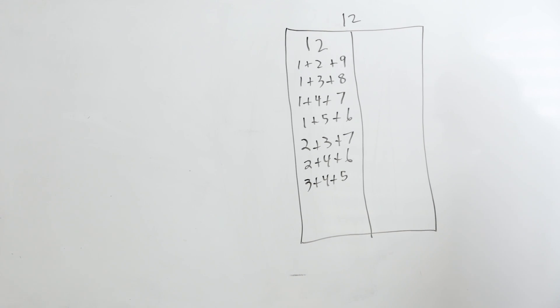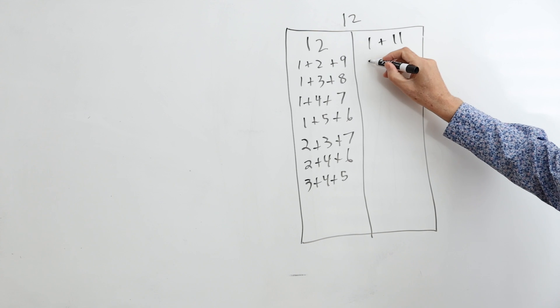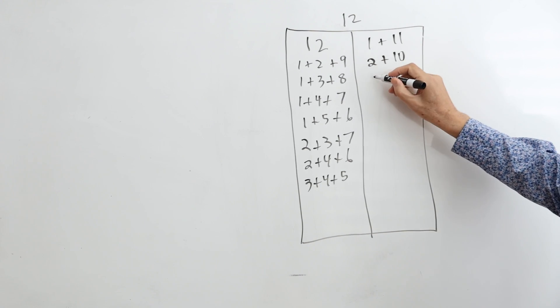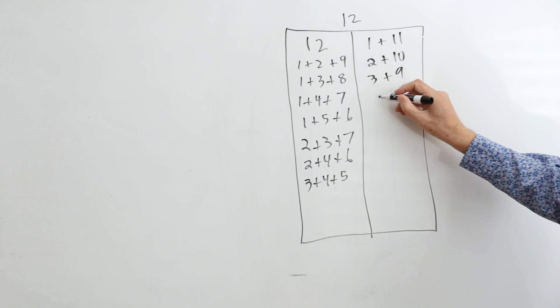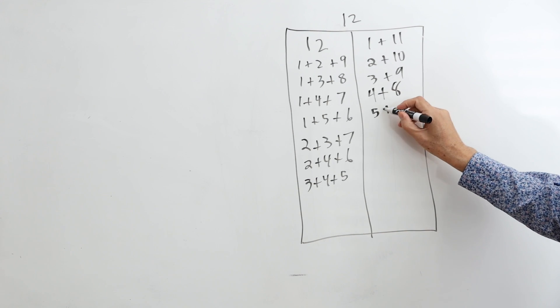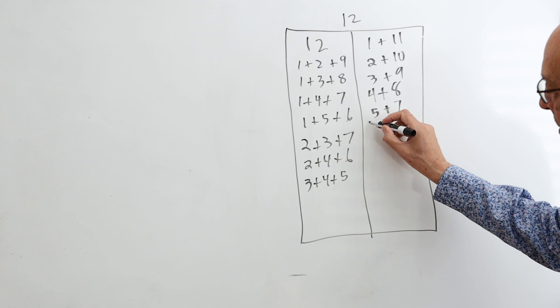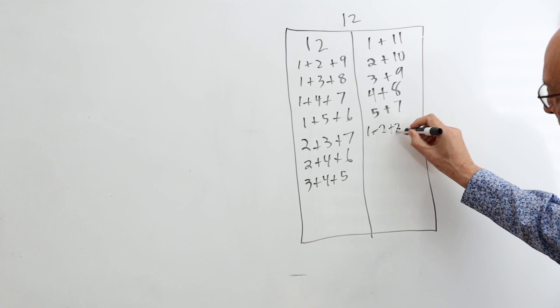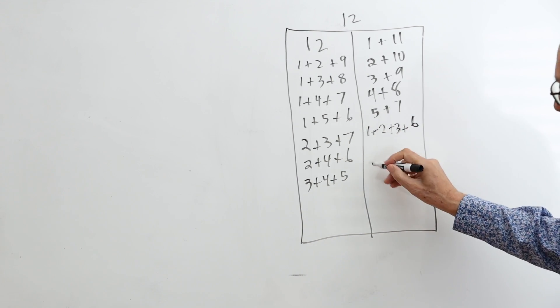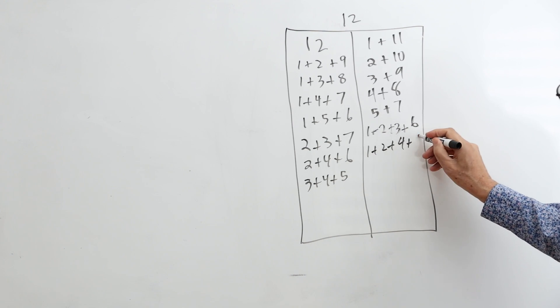Now let's make 12 with an even number of summons, so we can go 1 plus 11, 2 plus 10, 3 plus 9, 4 plus 8, 5 plus 7. And I can also do it 1 plus 2 plus 6, 1 plus 2 plus 4 plus 5.